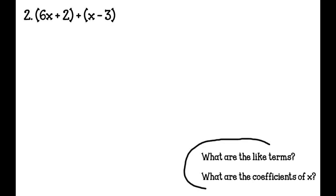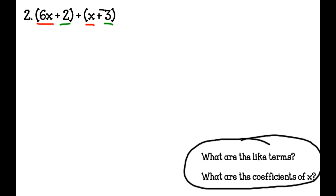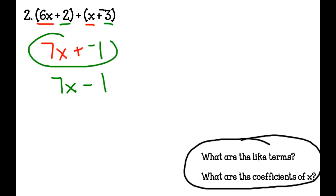Okay, number 2. These questions are down here to help guide you if you need any assistance. The first thing I'm going to do is add the opposite, so it becomes x + (−3). My like terms are 6x and x, and 2 and −3 are like terms. 6x + x = 7x, and 2 + (−3) = −1. So I have 7x + (−1), which you could also write as 7x − 1. Either one is a correct answer.